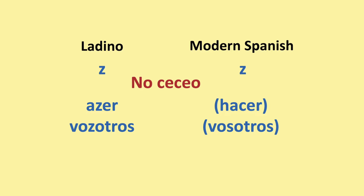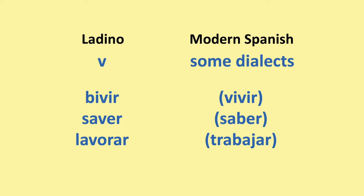Ladino pronounces the V like the English V. In some modern dialects of Spanish, they also pronounce this V similarly. So in Ladino you would say 'vivir'; in modern Spanish, 'vivir'. Ladino 'saber'; in modern Spanish, 'saber'. And 'lavorar', which means 'trabajar', or to work, in Spanish.